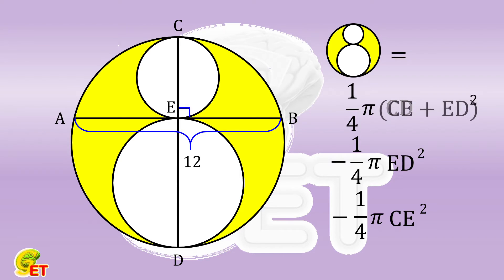And CD is CE plus ED. A quarter of pi is the common factor. And the left over is equal to twice CE times ED.